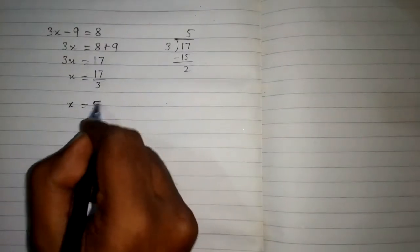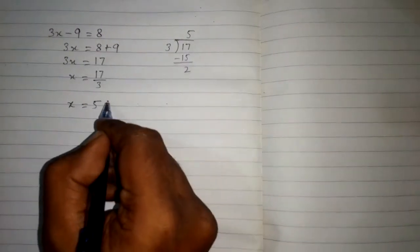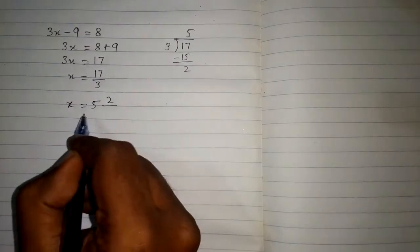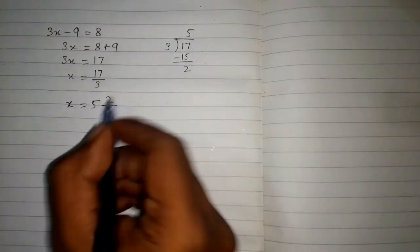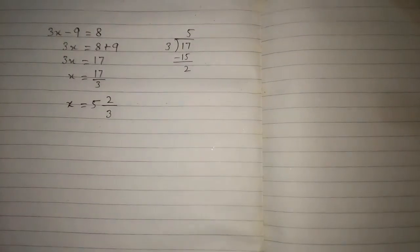this 5 as a whole number and the remainder will be written on the top of the fraction and the divisor 3 will be written on the bottom of the fraction. So the 17 upon 3 can be written as